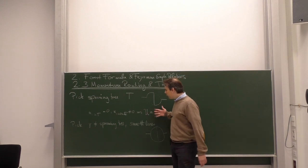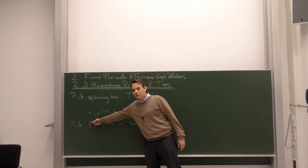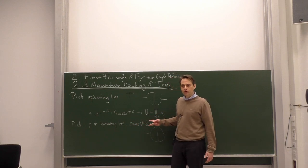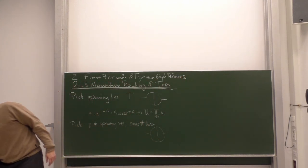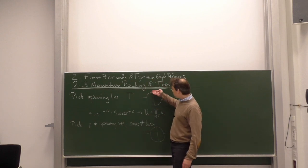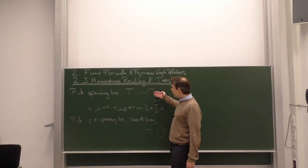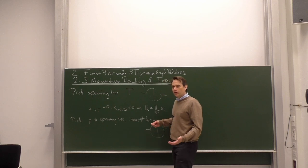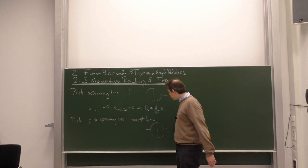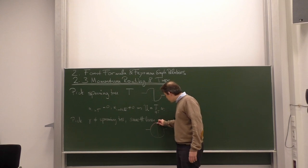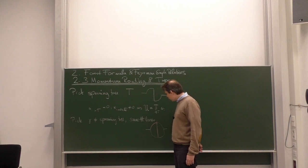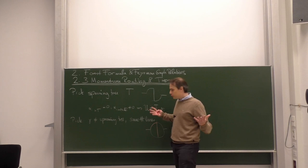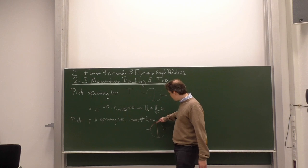So we can evaluate the Symanzik polynomial very easily for this alpha configuration by choosing the independent loop momenta associated with those additional lines. The corresponding matrix in this quadratic form is diagonal and consists only of exactly these alphas. The Symanzik polynomial for that case is the product of the alphas which are not inside the tree. Now let's do the opposite: pick a subgraph gamma which is not a spanning tree but has the same number of lines as any spanning tree.